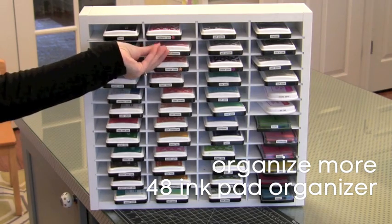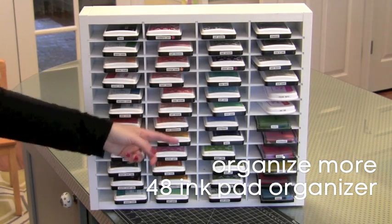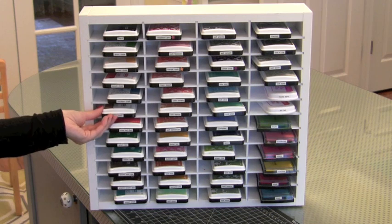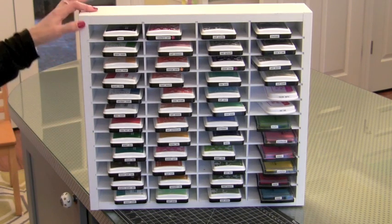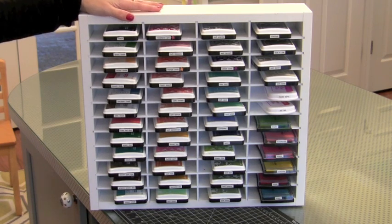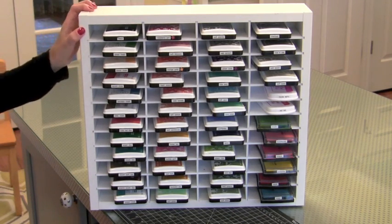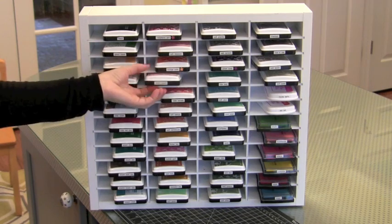My favorite piece is this big 48 ink pad organizer from Organize More. I keep mine in a cabinet but you can hang it on the wall, set it on a counter, whatever you want. I have my most often used inks in here. I have another one that has my Memento Lux inks and other things. So I have these in a cabinet together. I find it quick and easy to get to the inks this way. I love this unit.